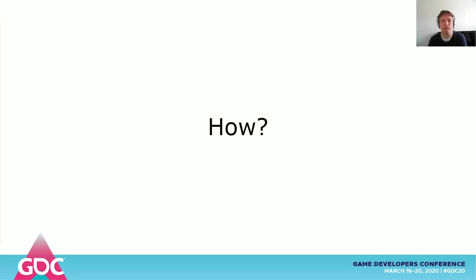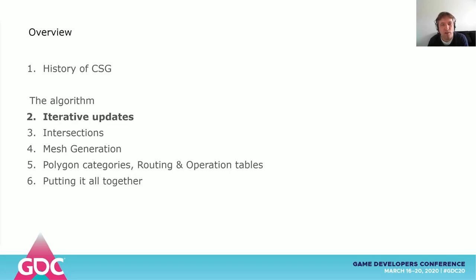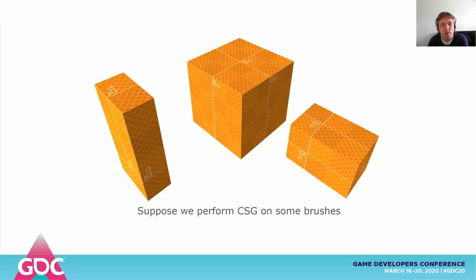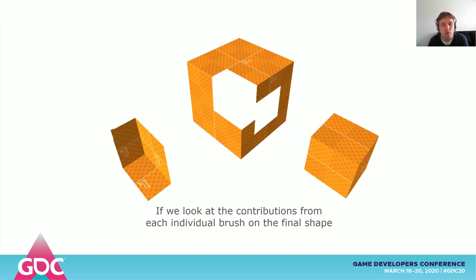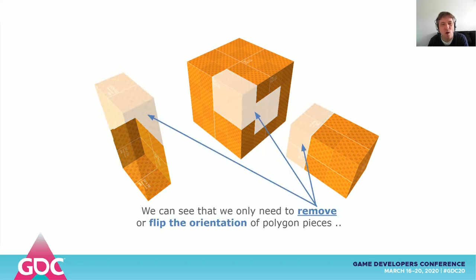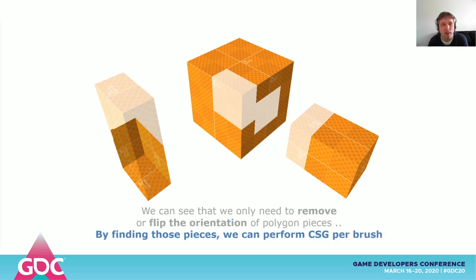So, how do you implement a modern CSG algorithm? Let's start with why this particular algorithm is interesting in the first place. Now, suppose we perform CSG on a couple of brushes. We combine those shapes together to create a mesh using a couple of boolean operations. If we look at the contributions from each individual brush on the final shape, we can see that we only need to remove or flip the orientation of pieces of polygons that already exist in our brushes. By determining which parts of our brushes need to be removed or flipped around, we can perform CSG per brush. At the end of the process, we put all those pieces together and we have a final mesh.